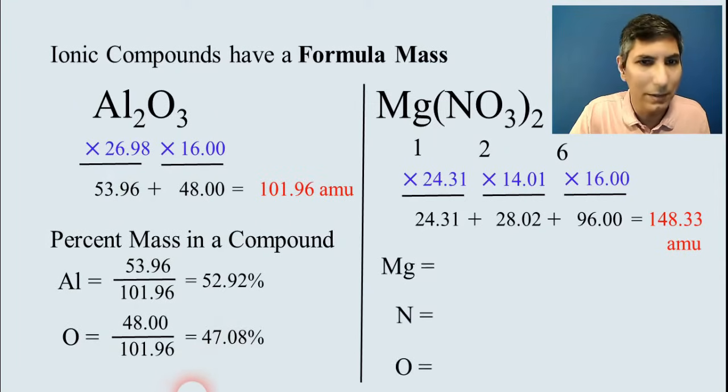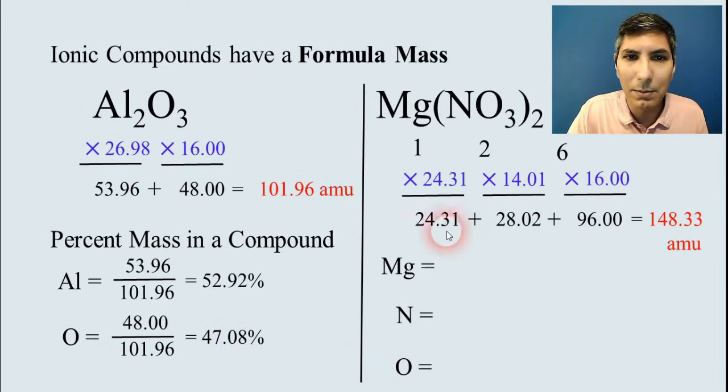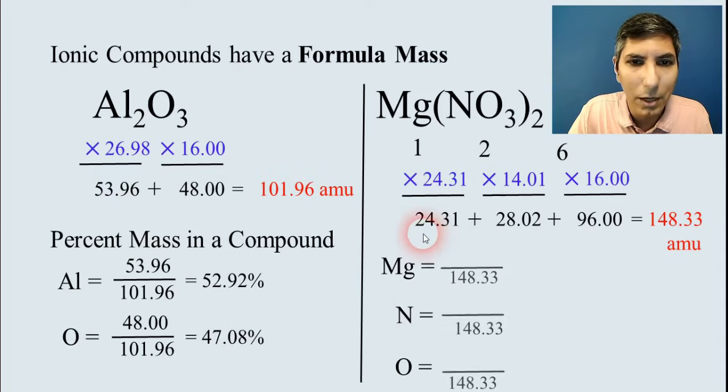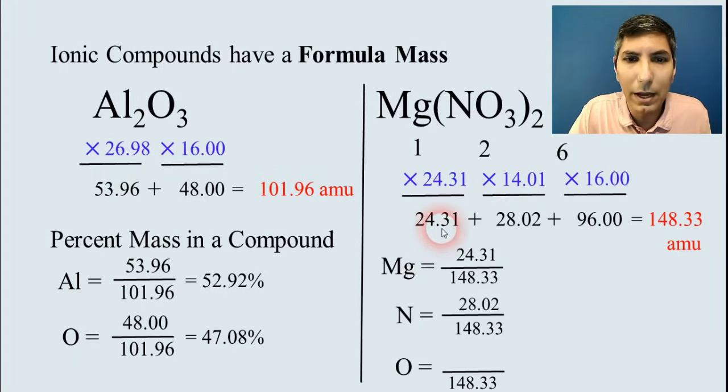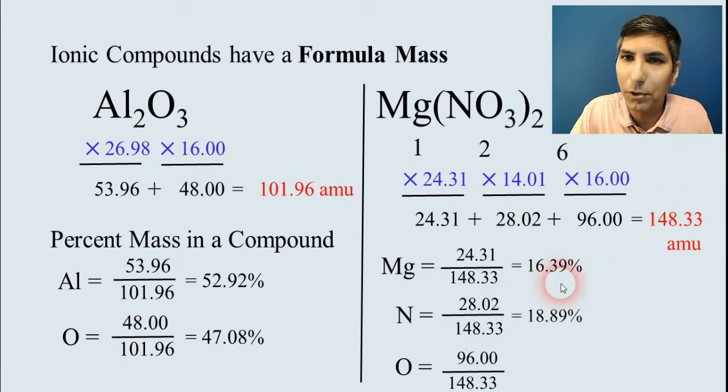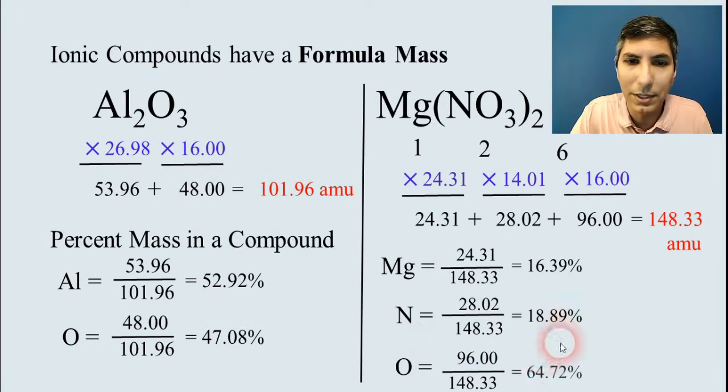We can do that for any compound. So in this case, magnesium nitrate. For magnesium, we just take each of those individual values and divide them by the total, and you find magnesium is 16.39 percent, nitrogen is 18.89 percent, and oxygen is 64.72 percent.